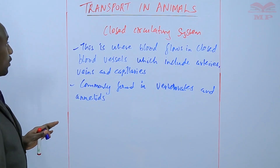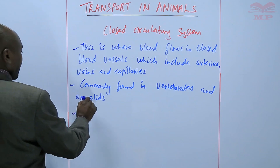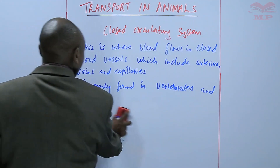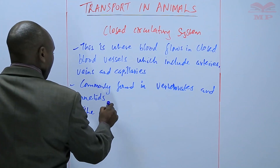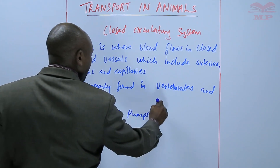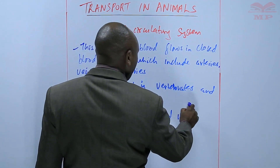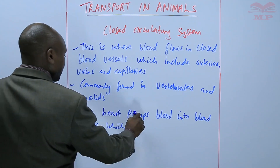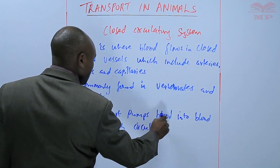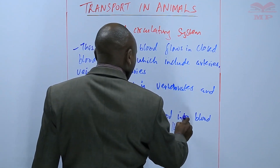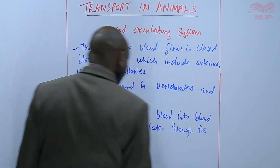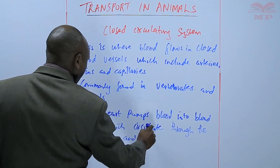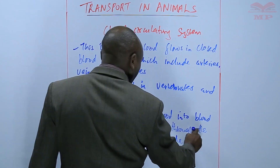In the closed circulatory system, the heart pumps blood into blood vessels, which circulates through the entire body and back to the heart.